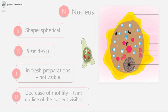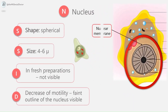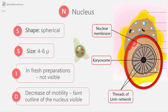Regarding the nucleus of the trophozoite: it is spherical, 4–6 micrometers in size, and contains a central karyosome surrounded by a clear halo, anchored to the nuclear membrane by fine radiating fibrils called the linin network, giving a cartwheel appearance as seen in the diagram. The nucleus is not clearly seen in living trophozoites but can be clearly demonstrated in preparations stained with iron hematoxylin.